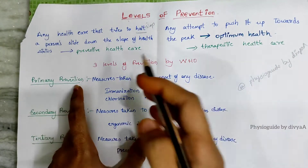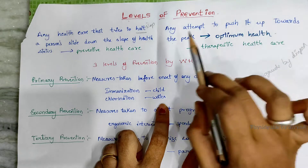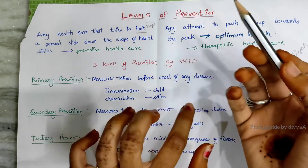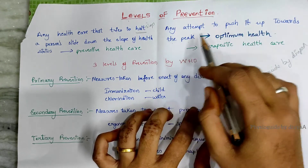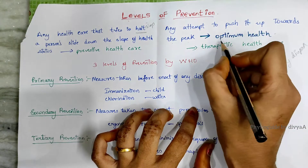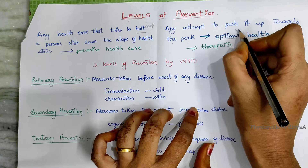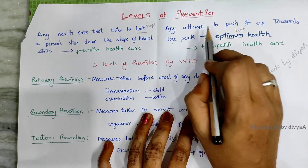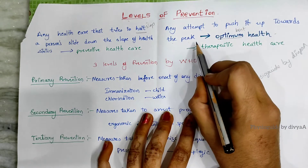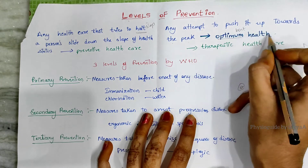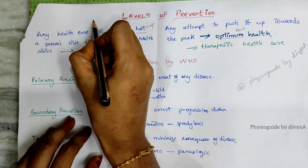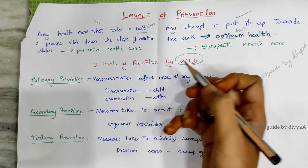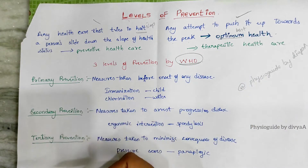Therapeutic health care means any attempt to push health status back up towards the optimum level. Prevention is divided into three levels: primary, secondary, and tertiary.